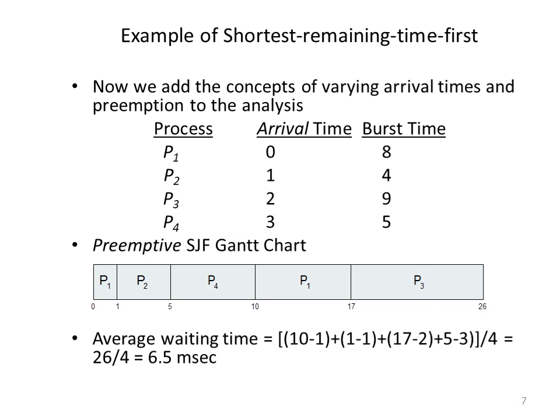At time 2, P3 arrives with a burst cycle of 9 ms, and P1's remaining burst cycle is 7 ms, so we continue with P2. At time 3, P4 arrives with a burst cycle of 5 ms. Comparing P1, P3, and P4, P4 has the least burst cycle, so P4 is allocated with the CPU first. Once P4 completes, among P1 and P3, the shortest CPU burst cycle is P1 at 7 ms, so P1 is allocated with the CPU first. Then at the end, P3 is allocated with the CPU.